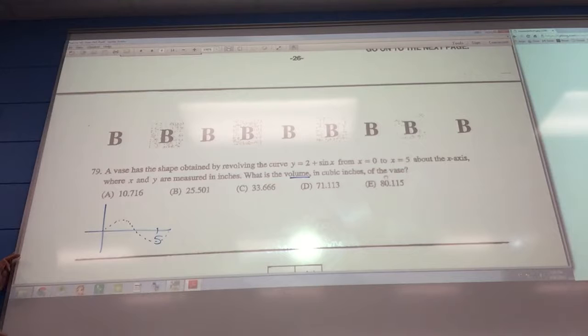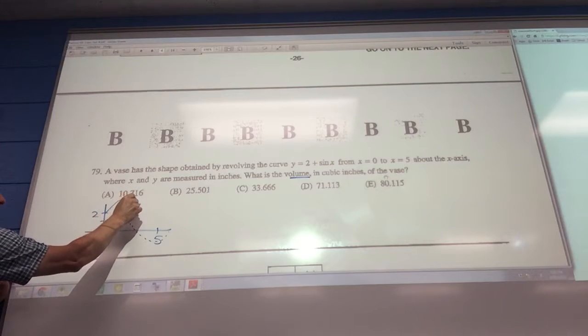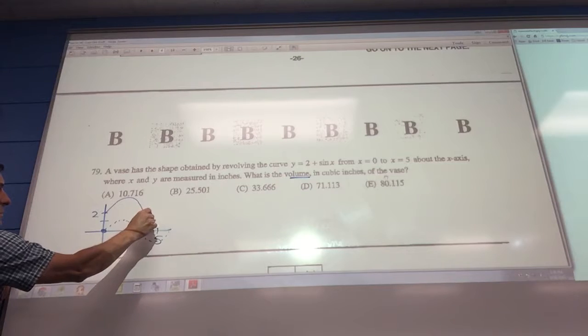5 is about here, but it's 2 plus sine of x, so wherever I was at 0, I'm actually at 2. So the graph would look something like this.